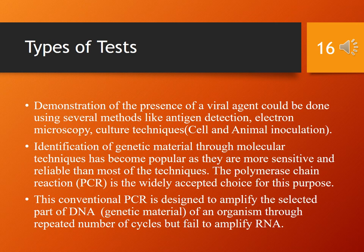Identification of genetic material through molecular techniques has become popular as they are more sensitive and reliable than most other techniques. The polymerase chain reaction is the widely accepted choice for this purpose. This conventional PCR is designed to amplify a selected part of the DNA of an organism through repeated cycles, but fails to amplify RNA.